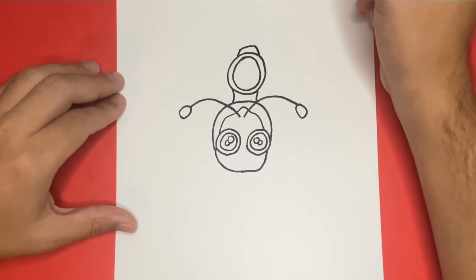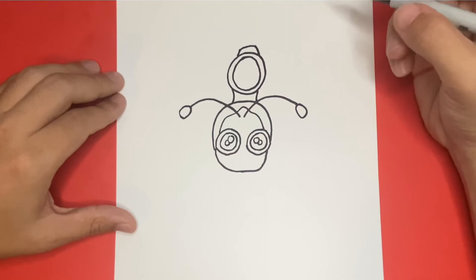So now that we have that drawn, the next step will be to draw the wings. So let's go ahead and begin by drawing two small lines that will connect from the circular shape to the antennas.